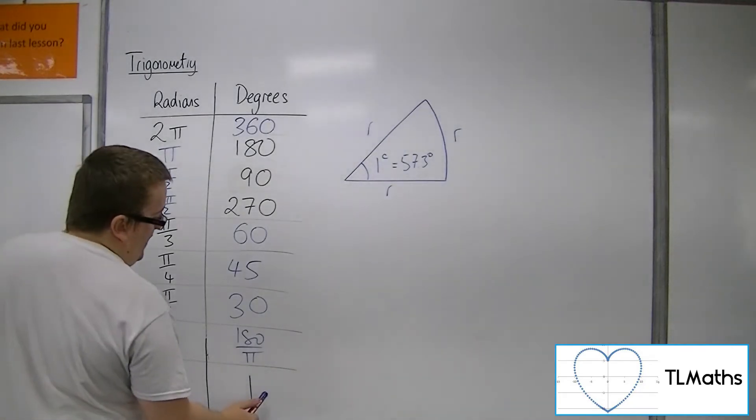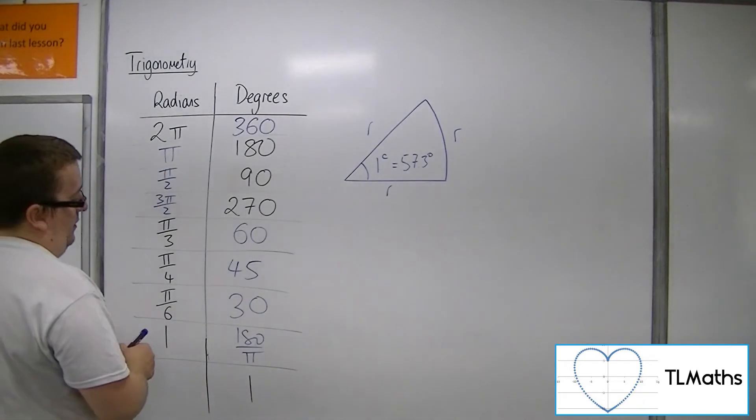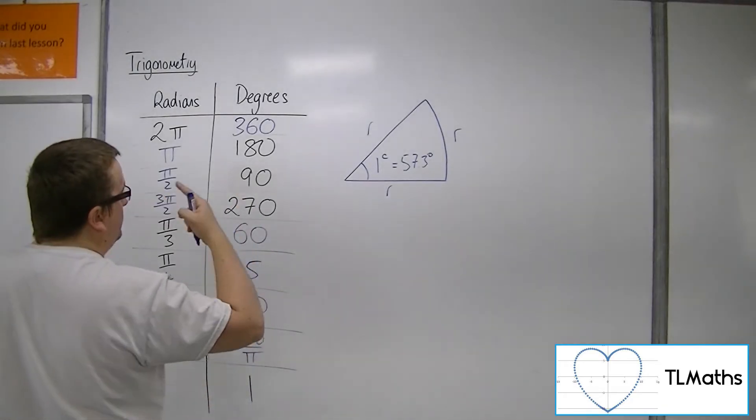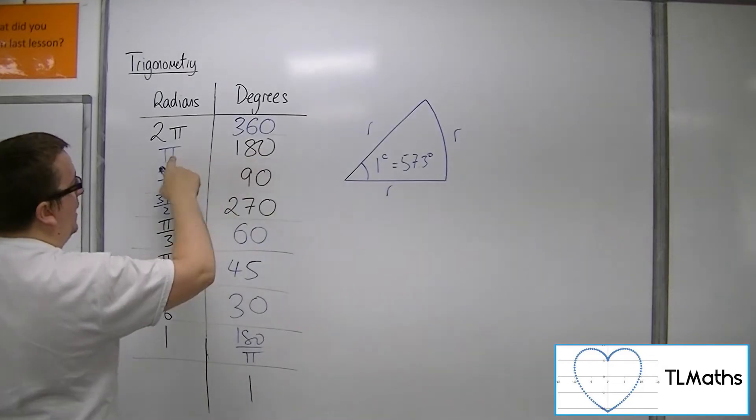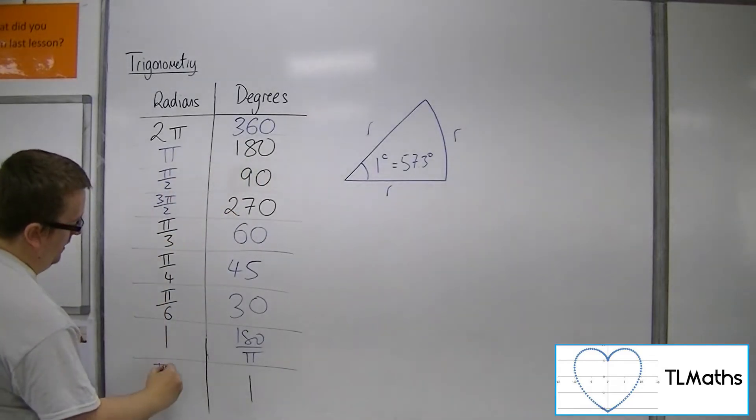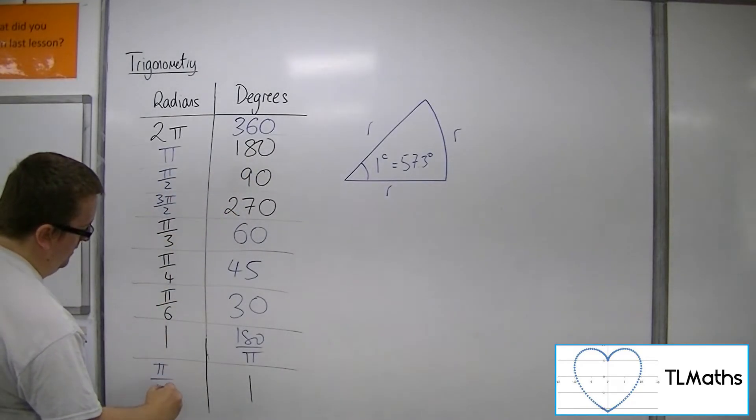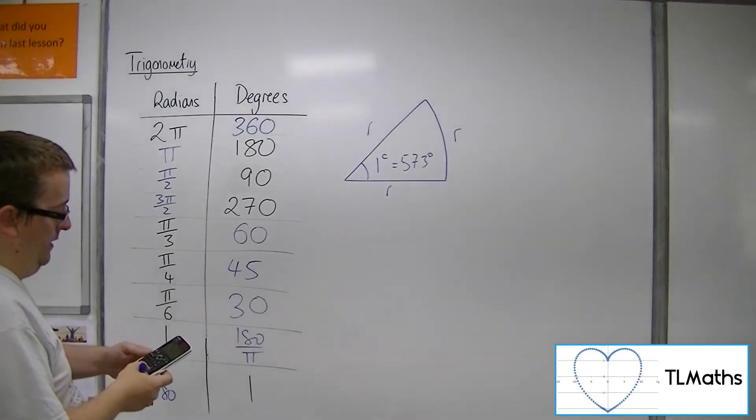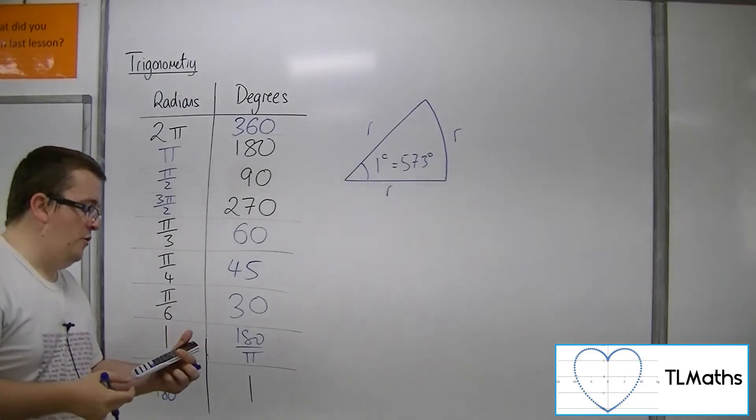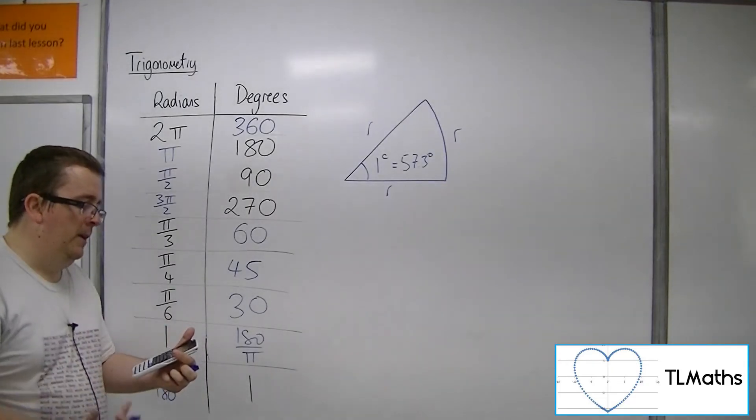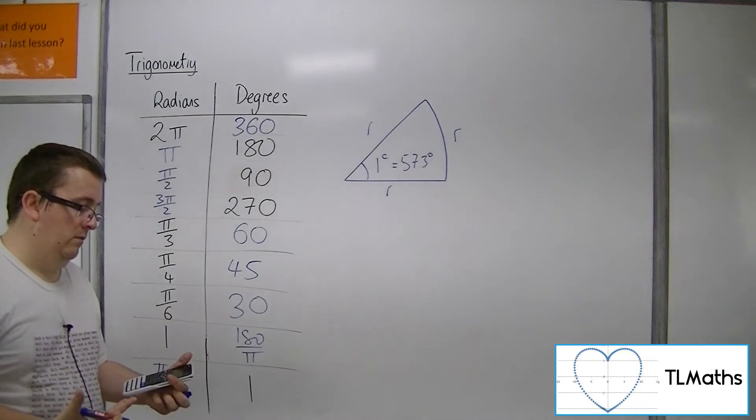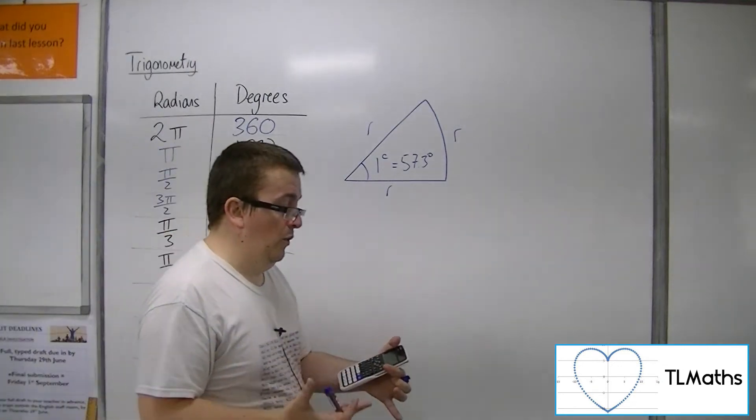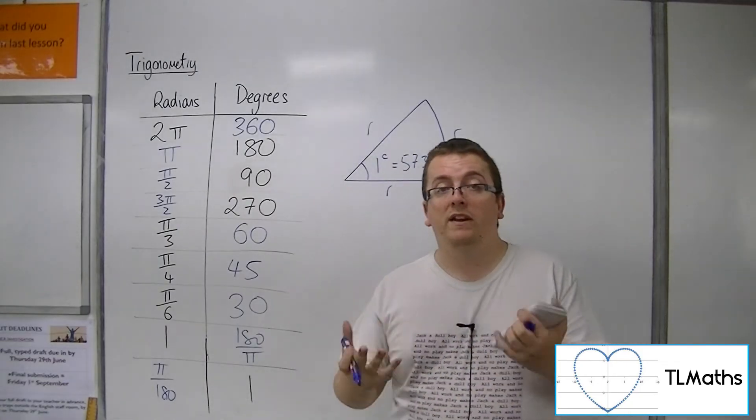So then if you want to work out what 1 degree is, then you can use a similar trick by dividing both sides by 180 to get pi over 180. So pi over 180 is actually 0.0175 to 3 sig fig radians. So 1 degree is 0.0175 radians.